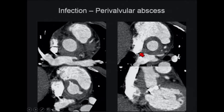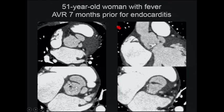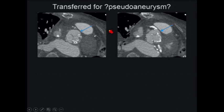Another patient with infection — seven months prior they had a valve replacement for endocarditis. Here we don't see a paravalvular abscess, but we do see multiple complex pockets of contrast communicating with the aortic lumen. There were at least two or three different pseudoaneurysms resulting from infection causing breakdown of tissue near the suture line.